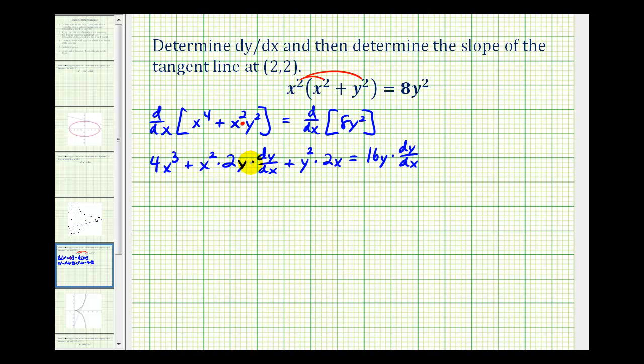What's a little bit different about this example is we have two terms that involve dy/dx. This term here and this term here. So we do have to get these on the same side. We'll move this product to the right side of the equation. So we'll have 4x cubed plus 2xy squared is going to equal 16y dy/dx minus 2x squared y dy/dx.